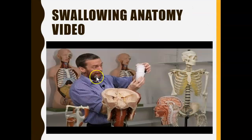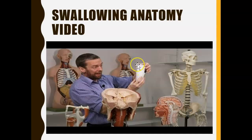There is a video I encourage you to watch that will help explain this better. In it, the presenter uses three cups to demonstrate: the top cup represents the superior constrictor muscle, the middle cup is the middle constrictor muscle, and the bottom cup is the inferior constrictor muscle. Watch the video to see how he demonstrates this concept.